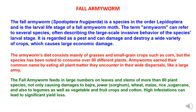The Fall Army Worm, having the scientific name Spodoptera frugiperda, is a species in the order Lepidoptera and is the larval life stage of a Fall Army Worm moth. The term army worm refers to several species, often describing the large-scale invasive behavior of the species' larval stage. It is regarded as a pest and can damage and destroy a wide variety of crops, causing large economic damage. The army worm's diet consists mainly of grasses and small grain crops such as corn, but the species has been noted to consume over 80 different plants.